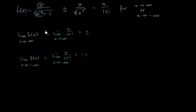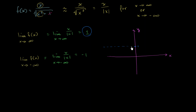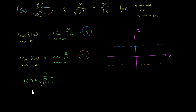Using this, we can actually try to graph our function. We have two horizontal asymptotes: one at y equals 1 — let me draw that as a dotted line — and another horizontal asymptote at y equals negative 1. If we want to plot at least one point, f of 0 equals 0 over the square root of 0 squared plus 1, which equals 0. So we have that point, and as x approaches infinity the function approaches the upper horizontal asymptote.